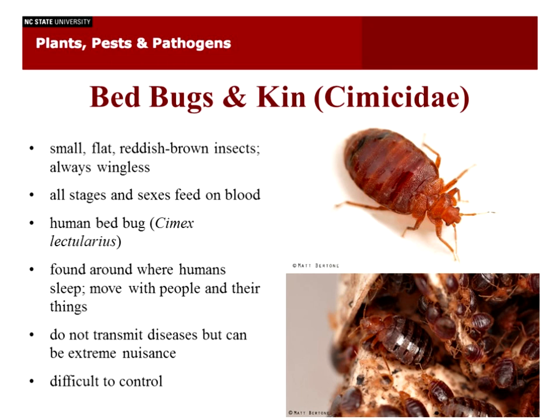All stages and sexes feed on blood. The human bed bug — our temperate human bed bug — Cimex lectularius is the most commonly found one, and the one that can survive off of us and reproduce in our homes. It's found around where humans sleep and moves with people and their things. If you go to a place infested with them, there's a good chance you may bring one or two back. If you have a female with eggs, they can build up a population in your home. It doesn't matter how clean or messy the home is — they're equal opportunity parasites.